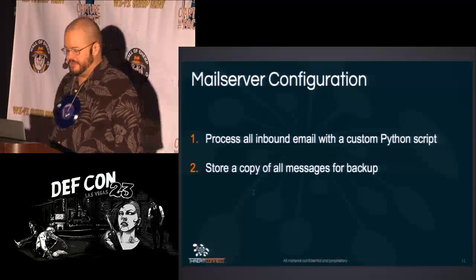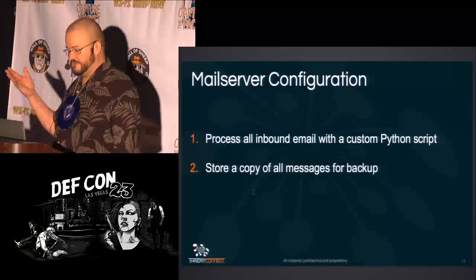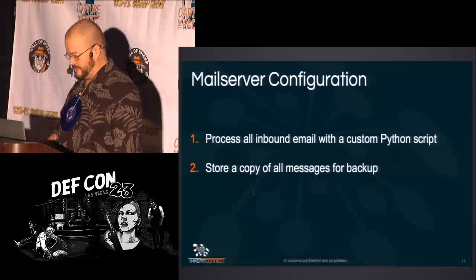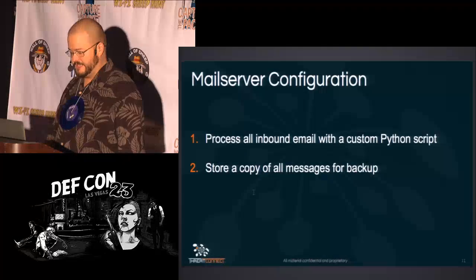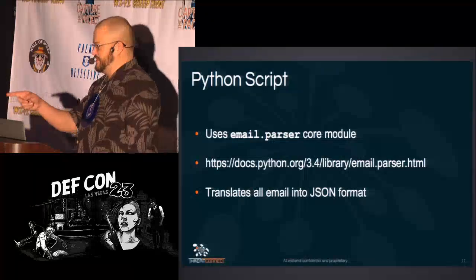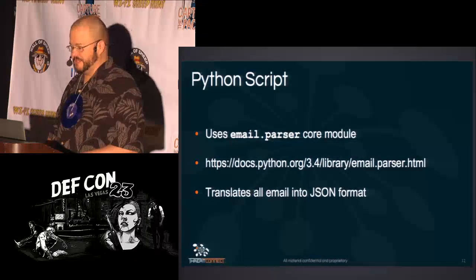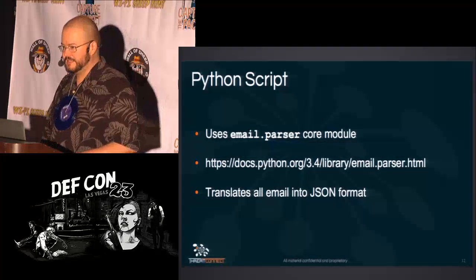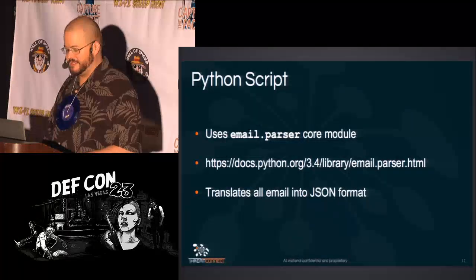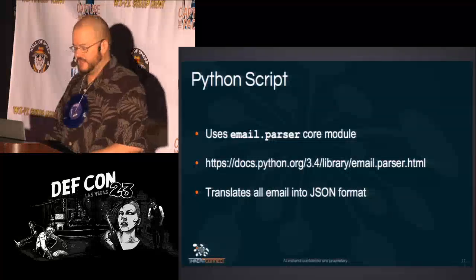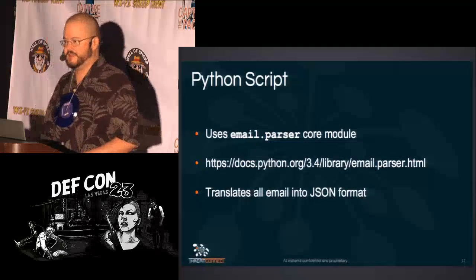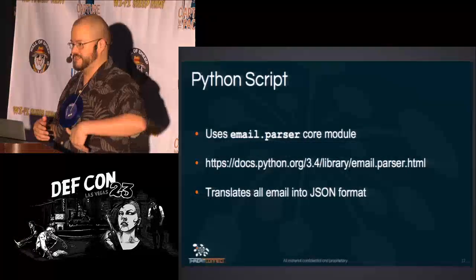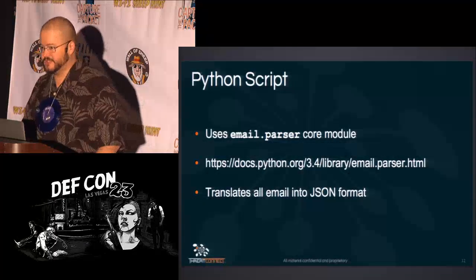The idea is to process all inbound email with a custom Python script. Because it's a mail server, you get a copy of all messages divided up by email address. I built the script using Python's email.parser core module — I prefer Python 3, though this library is almost the same in 2.7 and 3+. It translates all email headers into JSON key-value pairs, making them more usable especially with Elasticsearch.